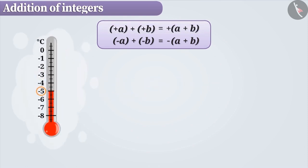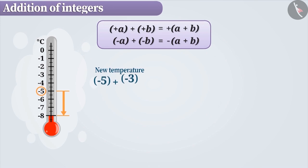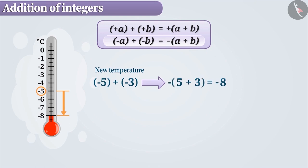It is expressed as plus 8. Similarly, if the temperature is minus 5 degrees centigrade and there is a change of minus 3 degrees centigrade in the temperature, then the new temperature can be found by finding the value of minus 5 plus minus 3. Here, we are adding two negative integers having the same sign. Therefore, in this case also, we will add them without a sign. Later, the minus sign is included in the result 8. That is, it is expressed as minus 8.